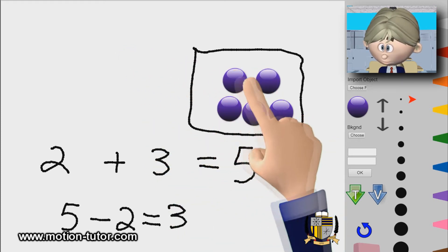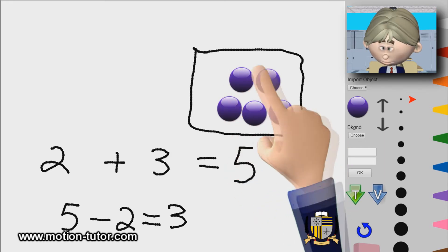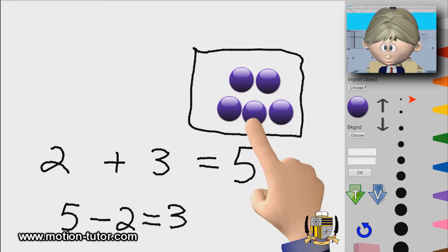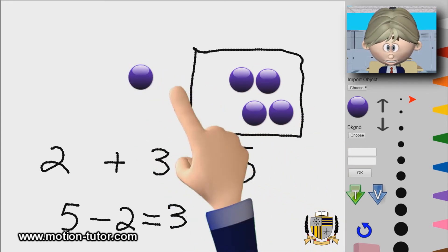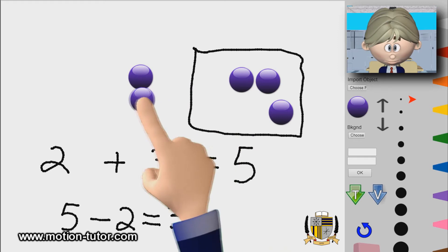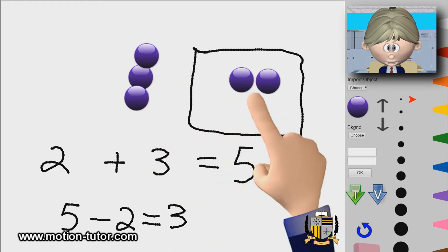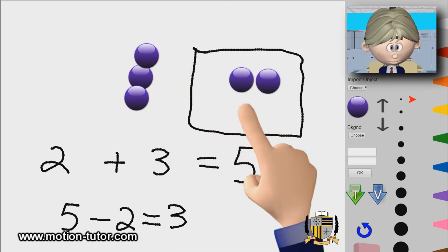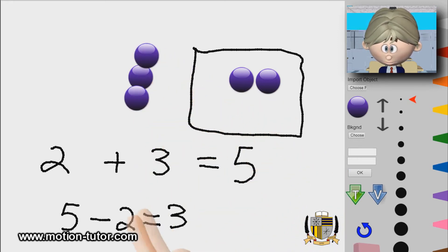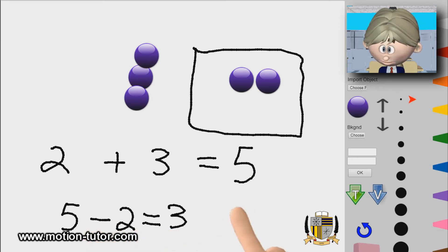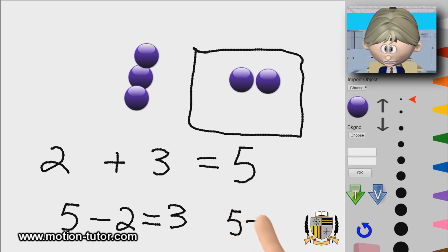Another thing we can do is look at this: this is five. Five take away three, then we're left with two. Let me write that one down also: five take away three is equal to two.